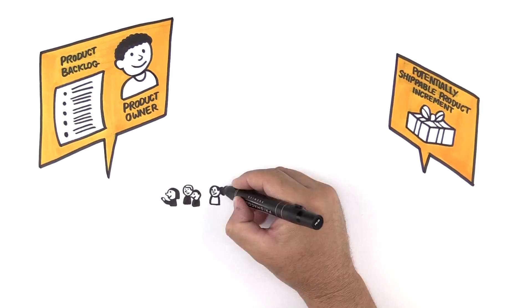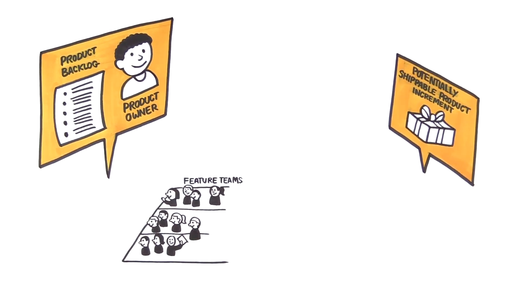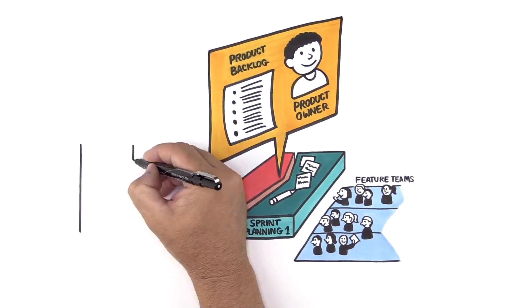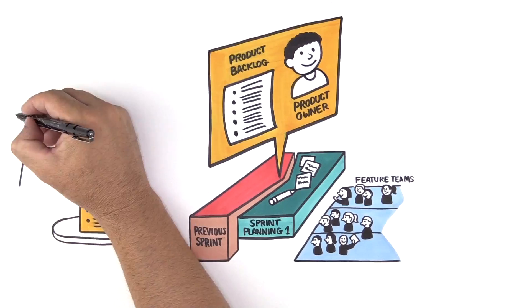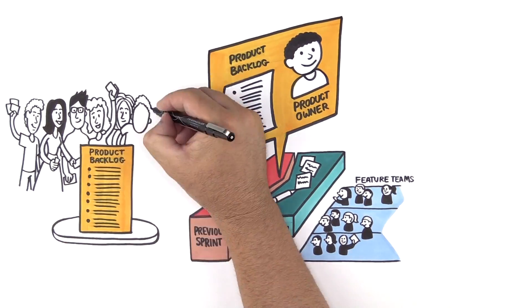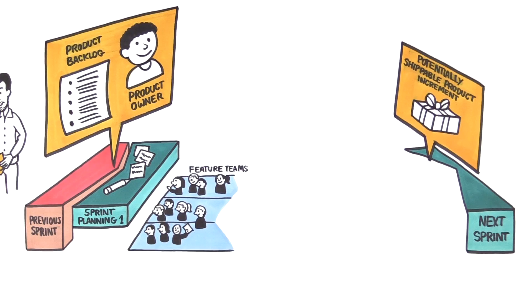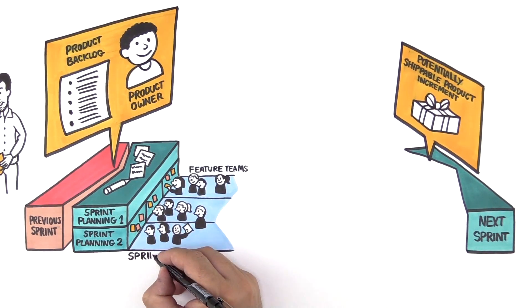Multiple teams develop this product one shared sprint at a time. Development is iterative and incremental. Each sprint starts with Sprint Planning One, a short shared event where each team selects features from the top of the Product Backlog that they will implement during the sprint. That's followed by Sprint Planning Two, where the teams discuss their strategies for developing their features during the sprint.